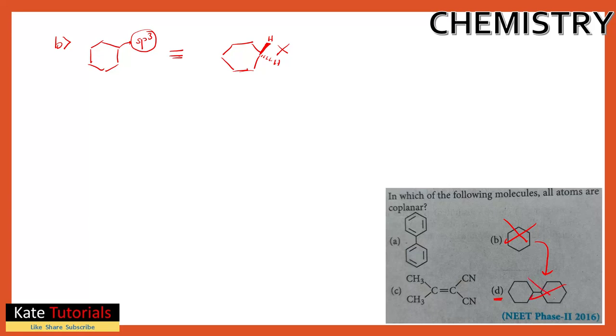Similarly, option D is also not coplanar because its hybridization is sp3. sp3 means tetrahedral geometry, so the atoms cannot all lie in the same plane.